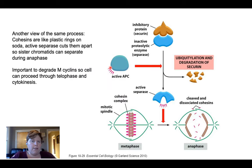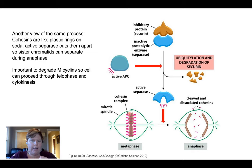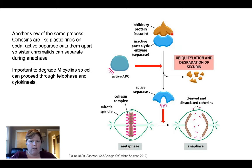Here's another view of that same process from the book. Those cohesin complexes keep the sister chromatids together. The active APC complex with those E2/E3 ligases signals the degradation of securin, the inhibitory protein, which then activates separase — an enzyme that catalyzes the separation of the sister chromatids.